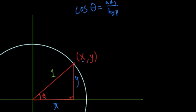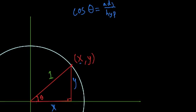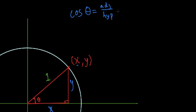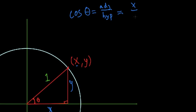The adjacent side for that angle, from the perspective of that angle, is x. And the hypotenuse is 1. So any number divided by 1 is just that number. So cosine of theta is actually x, or x equals cosine theta.